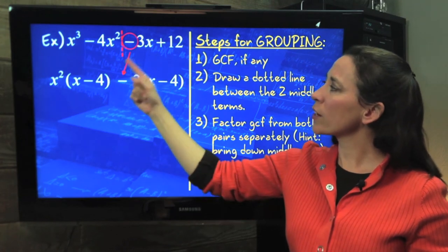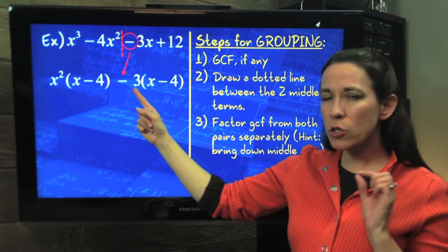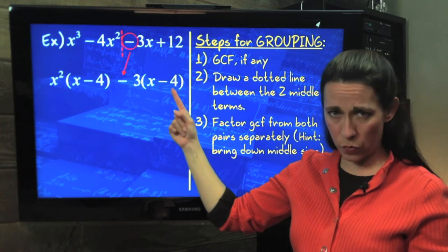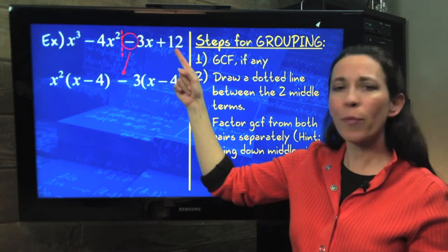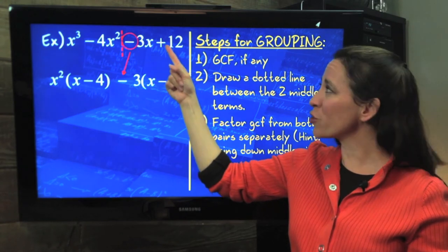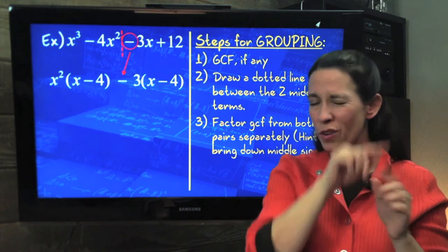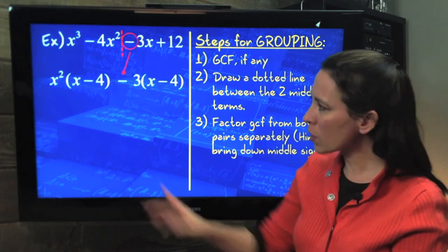And also, when you factored out that negative 3, did you take into consideration that a negative 3 times a negative 4 will give you that positive 12? Some people just bring down that sign here, and they're not focusing on the distributive property when you're factoring out that negative.